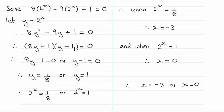Then you can factorize it and put each factor equal to 0. Solve for y and you get y equals 1 eighth or y equals 1. You could use the quadratic formula here if you want, but it does factorize, so that's a lot quicker.